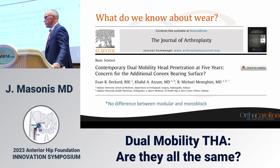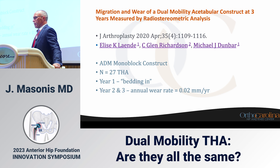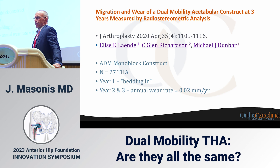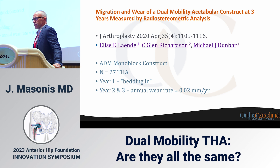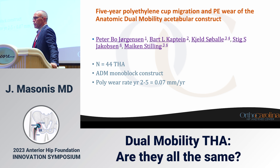There have been some concerns voiced about wear in dual mobilities. Looking at RSA migration and wear data on dual mobility acetabular constructs at three years, there is an initial bedding-in period in the first year — thought to be due to the second articulation — but years two and three show a very acceptable linear annual wear rate of 0.02 millimeters per year. Another study of 44 hips with a monoblock construct shows a polyethylene wear rate at years two to five of 0.07 millimeters per year — very acceptable.